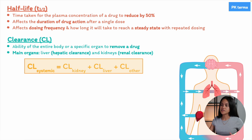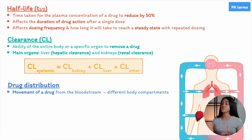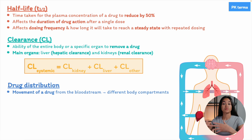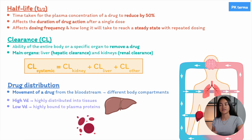Clearance helps us understand how quickly a drug is eliminated and is important for calculating maintenance doses to achieve steady-state concentrations. Next is volume of distribution — a theoretical volume that a drug would occupy if it were uniformly distributed throughout the body at the same concentration as in the plasma. A large volume of distribution indicates extensive distribution into tissues, while a small volume of distribution suggests the drug remains largely in the bloodstream.